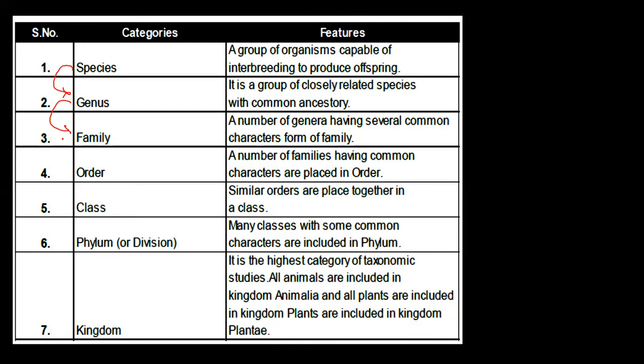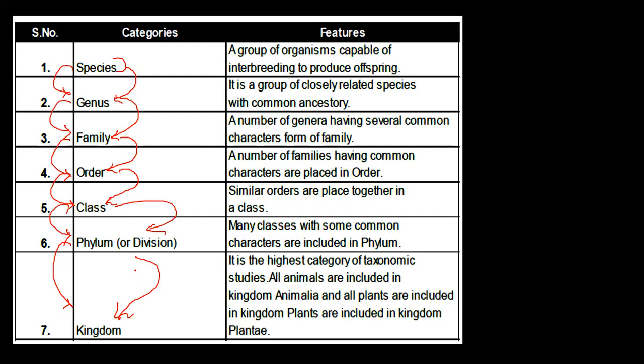Species is the lowest level — that which actually exists in nature. Genus, family, order, class, phylum, and kingdom are all on paper — they are conceptual groupings. Also note: 'Division' is used in plant classification, while 'Phylum' is used in animal classification — they represent the same hierarchical level.